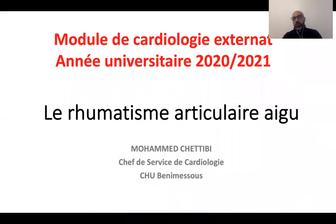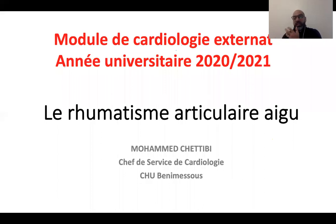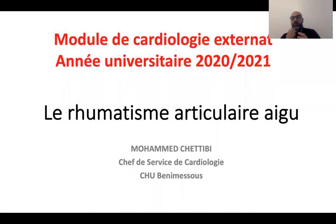Ça n'a rien à voir avec le premier cours. Le rhumatisme articulaire aigu est une maladie qui était très développée en Algérie, surtout dans les années 60-70, liée aux conditions socio-économiques. En cardiologie, il ne nous intéresse pas directement puisque c'est une maladie qui touche surtout l'enfant. Ce qu'on va récolter à l'âge adulte, ce sont les complications cardiologiques du RAA, qui touchent surtout les valves. La maladie des valves était la plus fréquente dans les services de cardiologie jusqu'aux années 80-90.